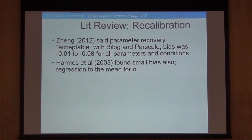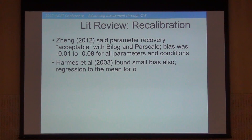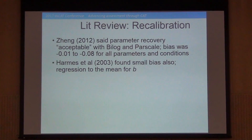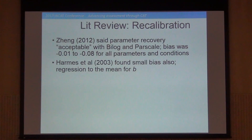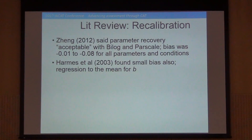We did a brief literature review, and what was out there wasn't too extensive. One study from 2012 found that parameter estimates were susceptible to range restriction on the CAT scale, but when they recalibrated the data they were able to get the original parameters back, and the bias was pretty small. Barnes et al. did the same kind of thing and also found very small bias issues — the average discrimination parameter was about 0.6, and after recalibration it came back to approximately the right value, with a noticeable but not extreme difference.